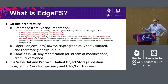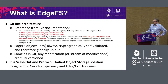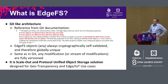Those versions are what we're managing and distributing across different locations. EdgeFS is a scale-out, protocol-unified object storage solution. It supports different protocols such as NFS and iSCSI, as well as S3 and S3X — a variation of S3 particularly for edge IoT use cases. Most importantly, it is designed for geo-transparency and edge IoT use cases.